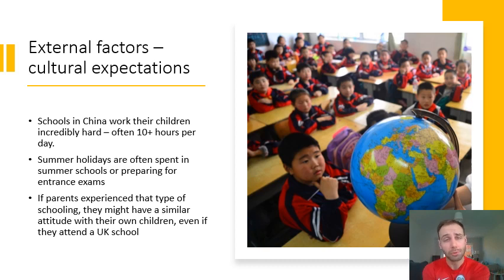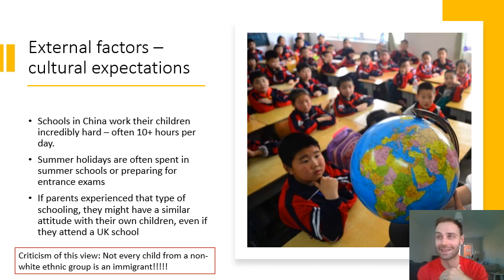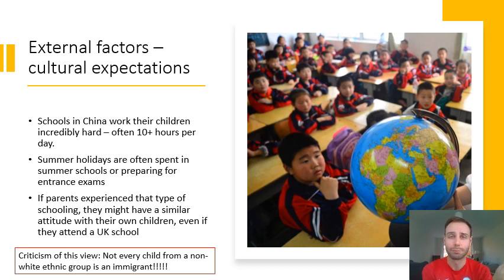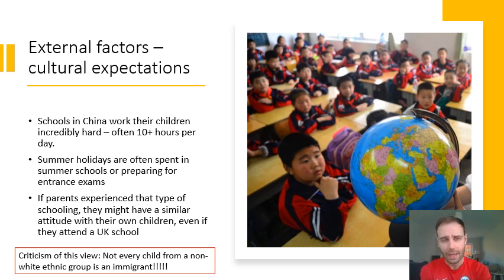There is a glaring criticism of this approach: not every child from a non-white ethnic group is an immigrant. It's completely ignorant to think that just because someone isn't white they must be an immigrant — the vast majority of non-white people in the UK are native-born. So this view only really works when talking about children who are immigrants, not all ethnicities. It's a small factor that could explain a very small group of people in the UK.